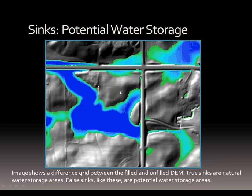A couple of comments about sinks and watersheds: it's important to consider the idea of a sink as a natural water storage area. That storage has to be considered, though for some types of analysis we want to fill it to assume water is flowing across the complete landscape. False sinks would be things created by digital dams — and we definitely want to remove those by breaching them so they aren't incorrectly represented in our analysis.